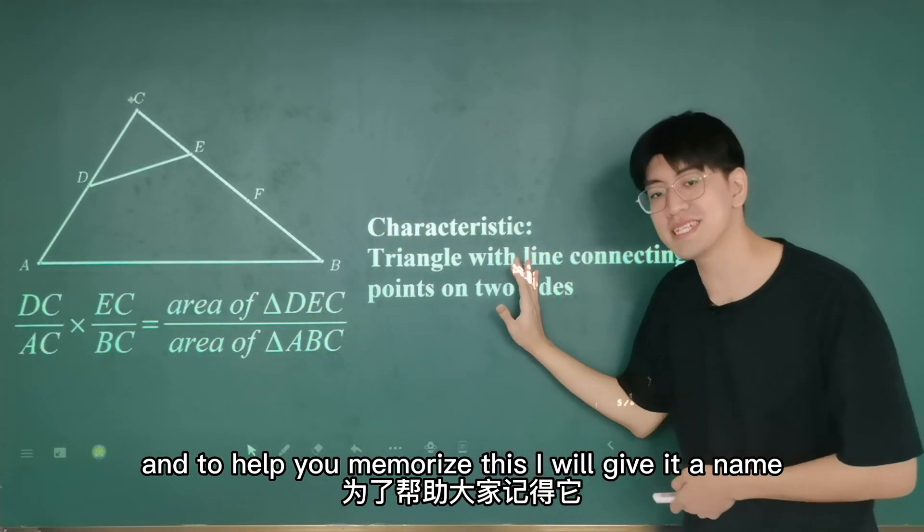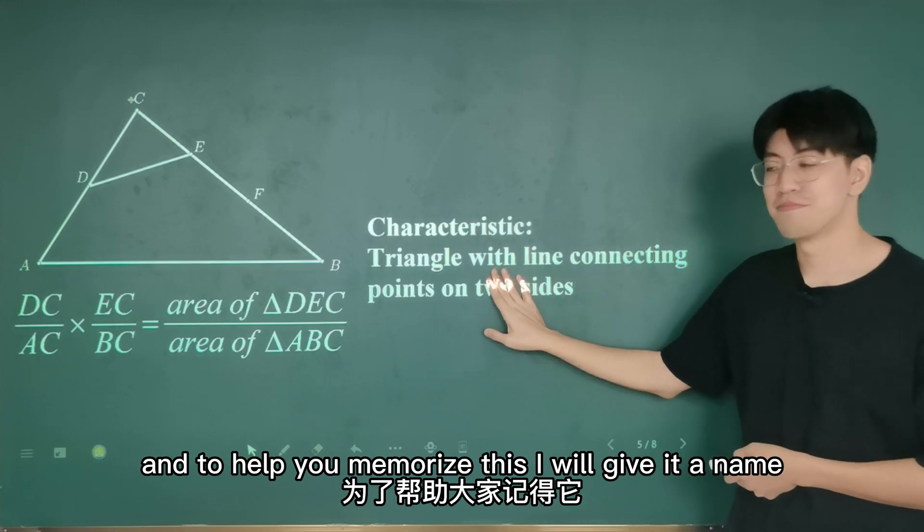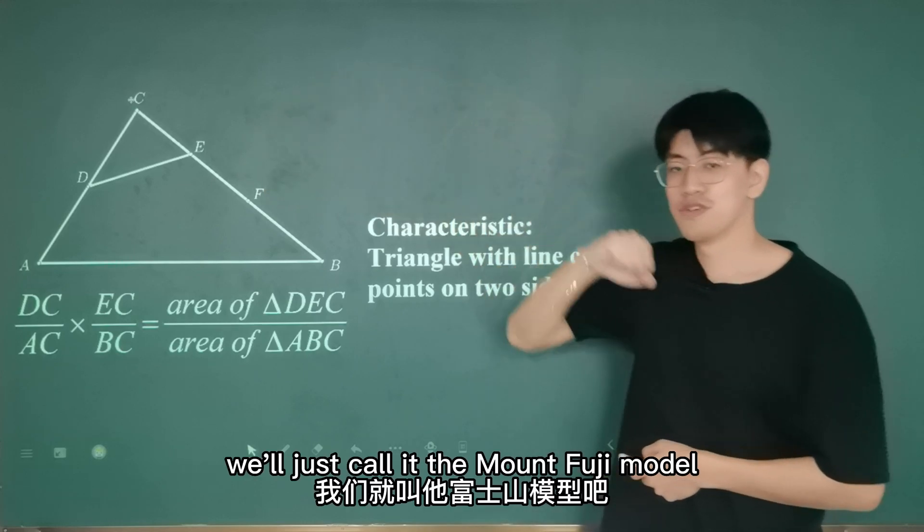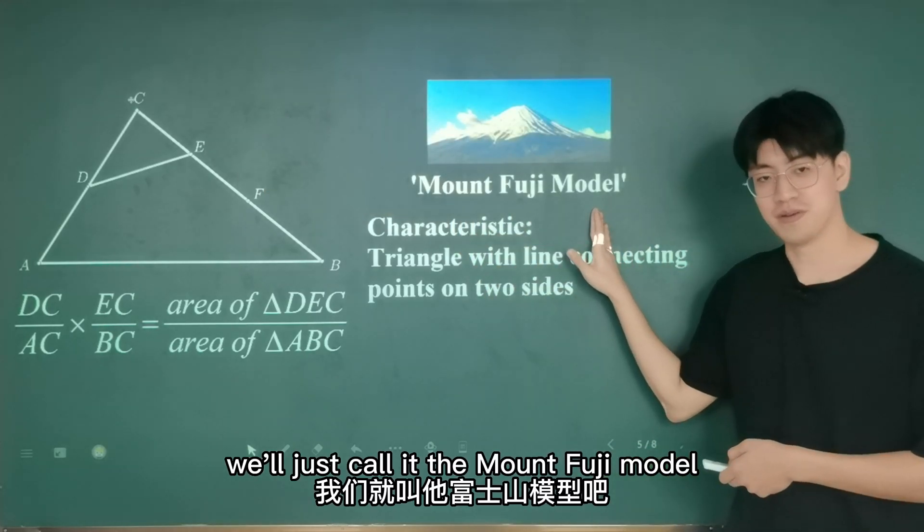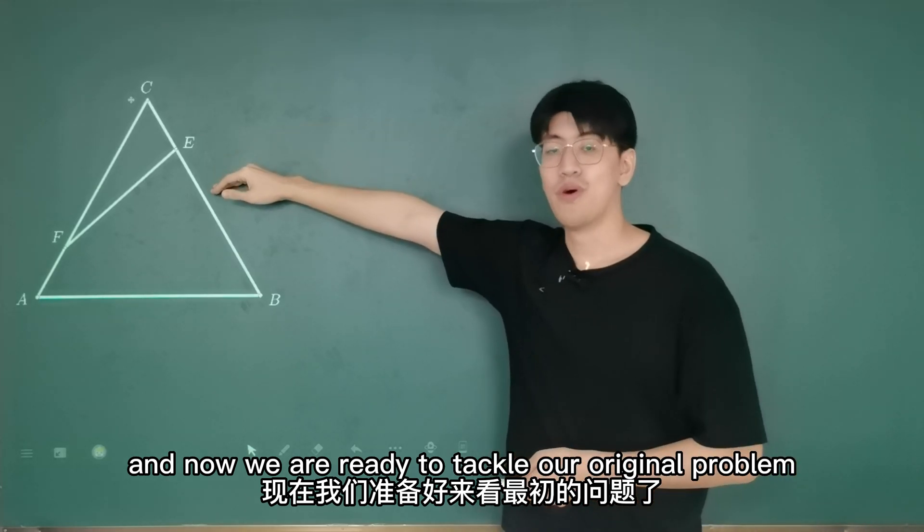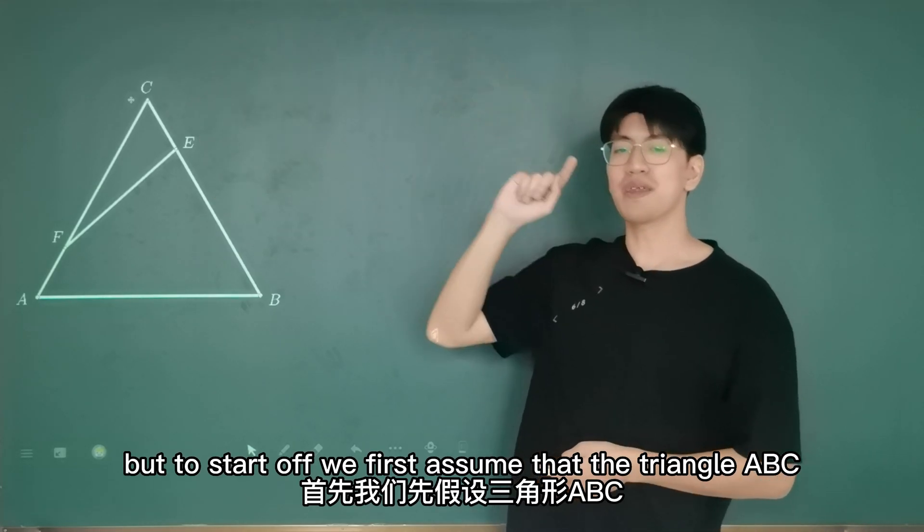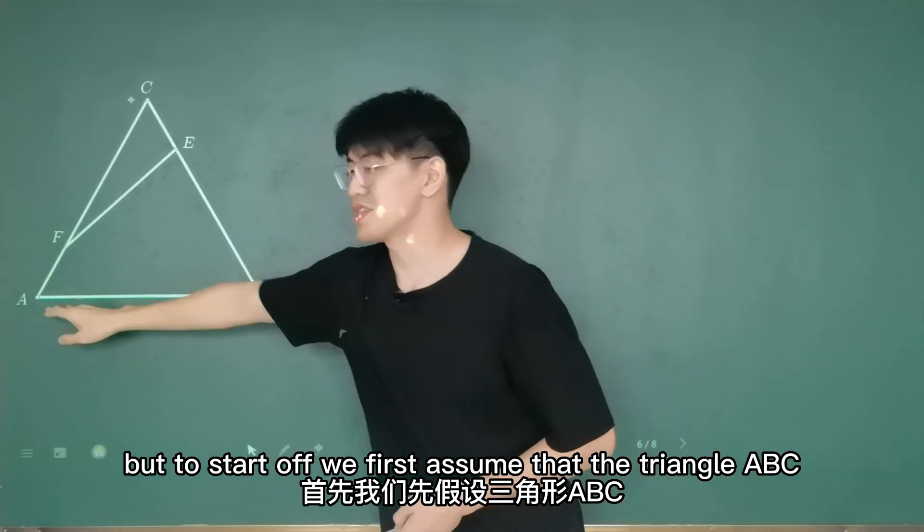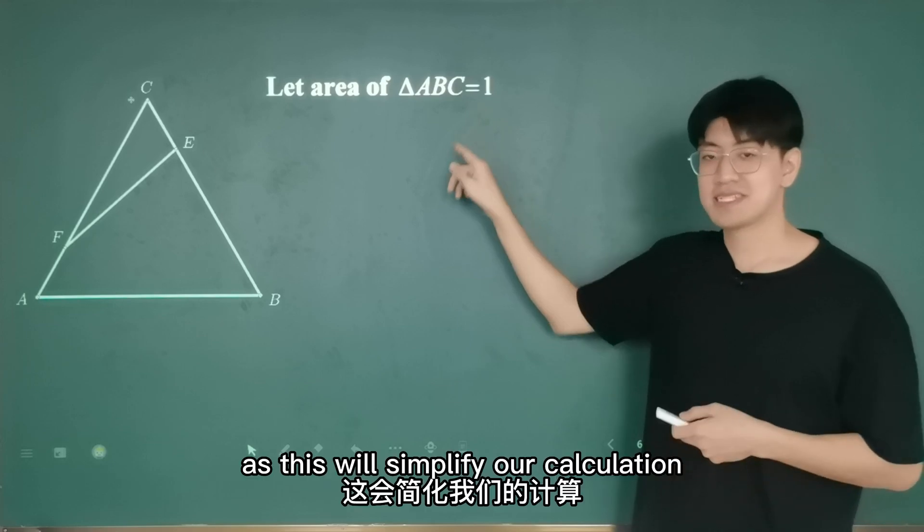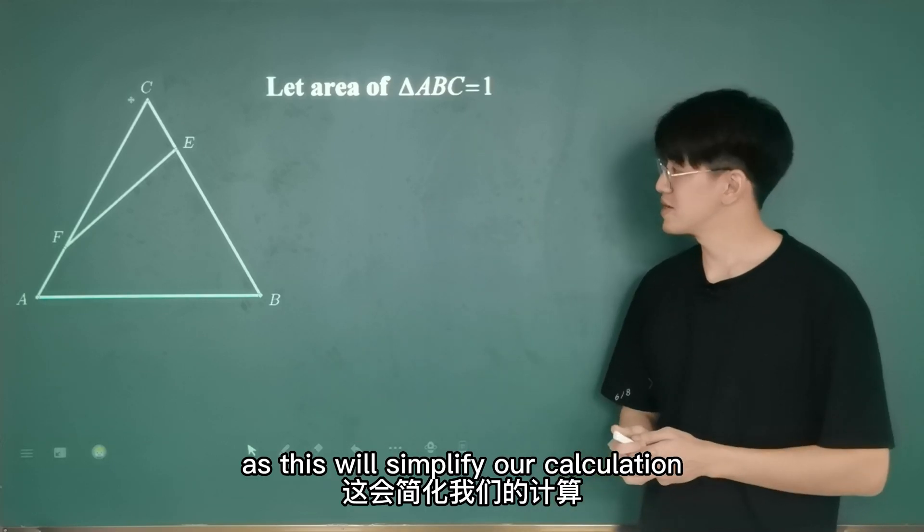we simply multiply the ratio of the two sides. And to help you memorize this, I'll give it a name. Since this shape looks so much like a Mount Fuji, we'll just call it the Mount Fuji model. And now we are ready to tackle our original problem. But to start off, we first assume that triangle ABC has area equals to one unit, as this will simplify our calculation.